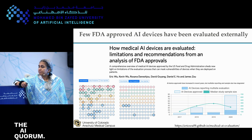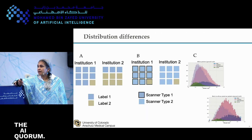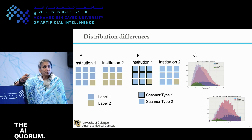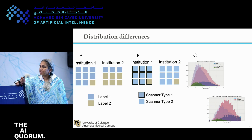Very few of the algorithms that are FDA-approved in the U.S. have actually been tested on external datasets — the algorithms went through the FDA process but were trained and tested on a single scanner system, so we don't know how robust they are. The things we see are scanner differences, protocol differences, prevalence differences, and disease differences. The really hard one is the potentially confounding between things of interest — for instance, looking at breast density, race, and breast size, the models pick up on shortcuts rather than the thing of interest. We have to be careful that we're not doing shortcut learning.